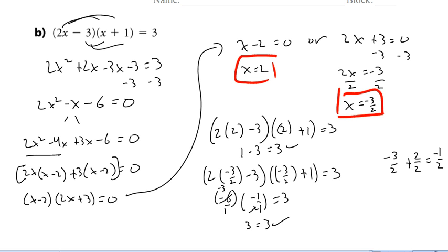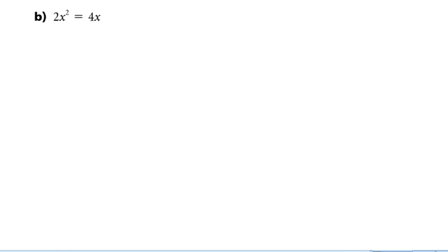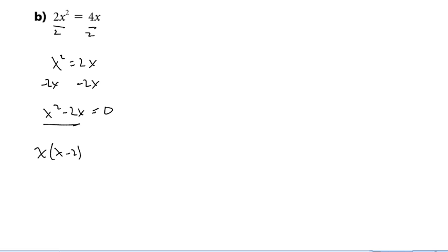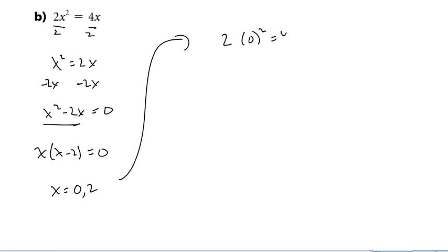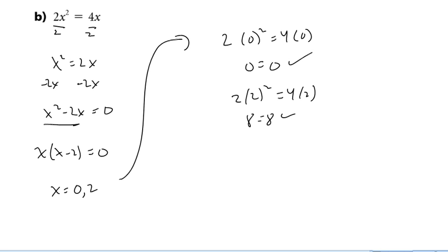Question B looks different and makes everyone's brains explode, but it's ridiculously easy. First, get rid of the common factor of 2 by dividing both sides by 2, giving x squared equals 2x. To factor, I need 0 on one side, so subtract 2x: x squared minus 2x equals 0. I've got a common factor of x, so pull it out: x times x minus 2. So x equals 0 or 2. Checking: 2 times 0 squared equals 4 times 0 — true. And I get 8 equals 8 — also true.